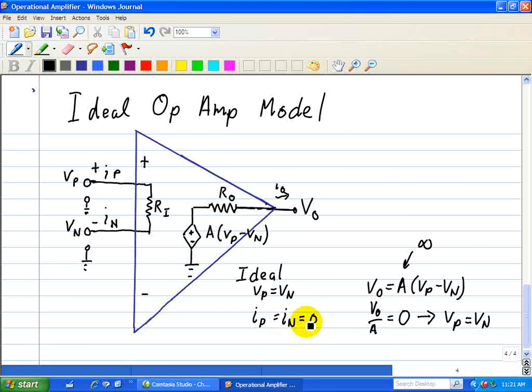Now, IP equals IN equals zero is a result that the input impedance, here, RI, denoted as RI, is equal to a very large number. When that's the case, when this is, let's say, our ideal case for this is infinite, then IP and IN is equal to zero, since no current can pass through this infinite resistor. So, these are two ideal characteristics associated with an op-amp when analyzing a circuit.